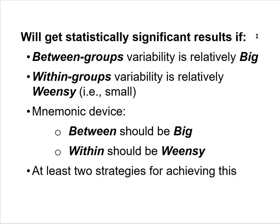We're likely to get statistically significant results if between-groups variability is relatively big and within-groups variability is relatively small — or 'weensy.' Here's a memory device: between should be Big, within should be Weensy. B is the first letter in both 'between' and 'big'; W is the first letter in both 'within' and 'weensy.' There are at least two strategies for achieving this.